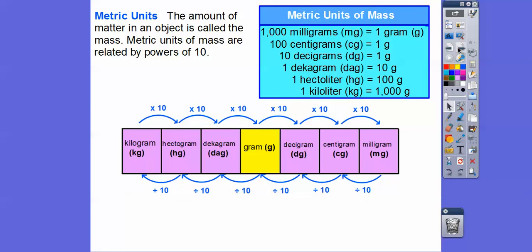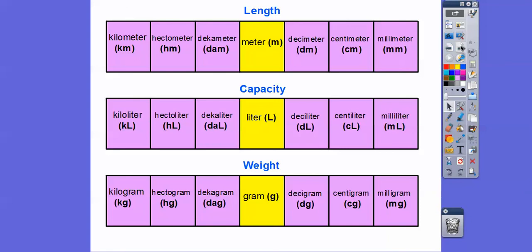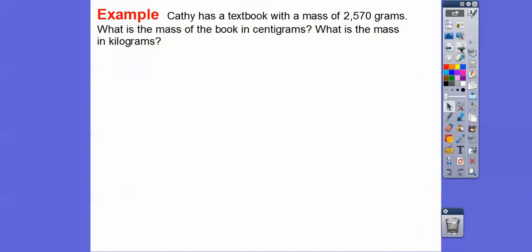Metric units. The amount of matter in an object, matter means how much it weighs, so the amount that it weighs in metrics is in terms of grams. Metric units of mass are related by powers of 10. Here's grams right here. If we go times 10, that'll give us decigrams, times 10 gives us centigrams, times 10 gives us milligrams. If we go from grams to the left, we go divided by 10, gets us decagrams, then hectagrams, then kilograms. Going to the right is times 10, going to the left is divided by 10.